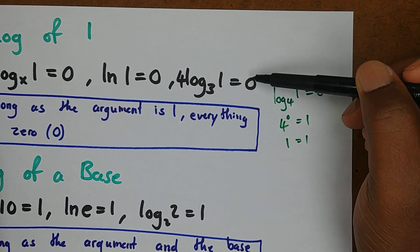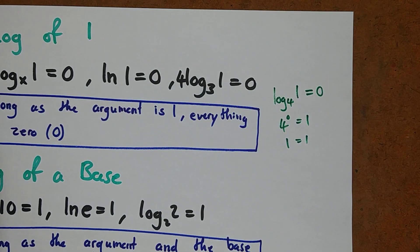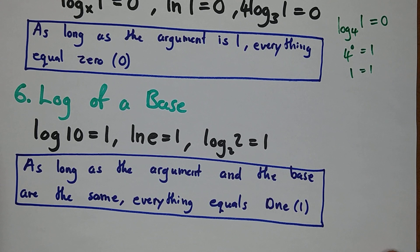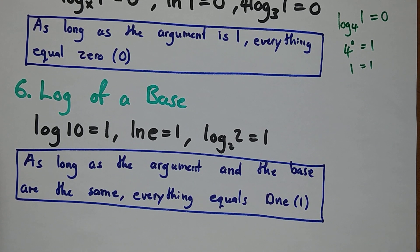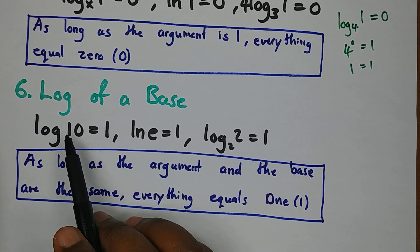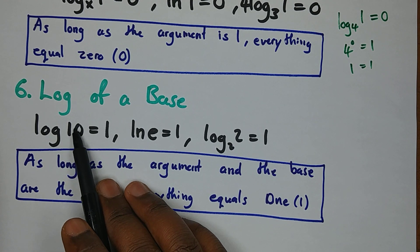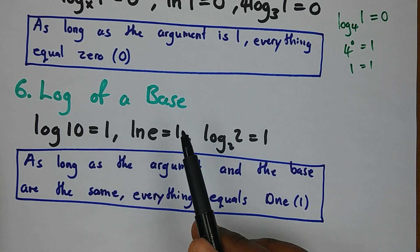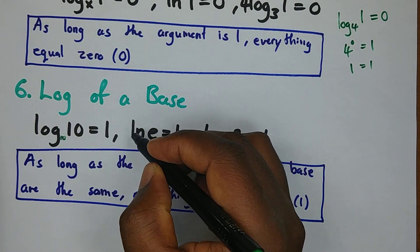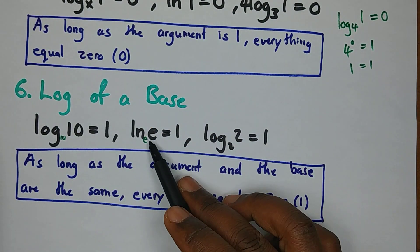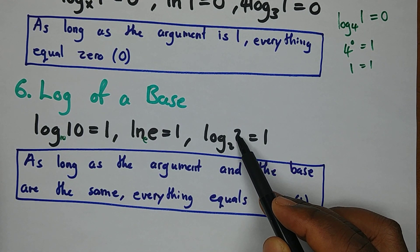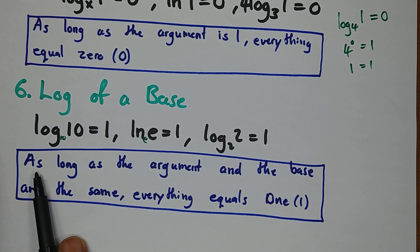The next law is the log of the base. As long as the base and the argument are the same, the expression equals 1. For example, log base 10 of 10 equals 1, and ln(e) equals 1 since the natural log is in base e. Log base 2 of 2 also gives 1. Whenever the argument and the base are the same, the expression equals one.